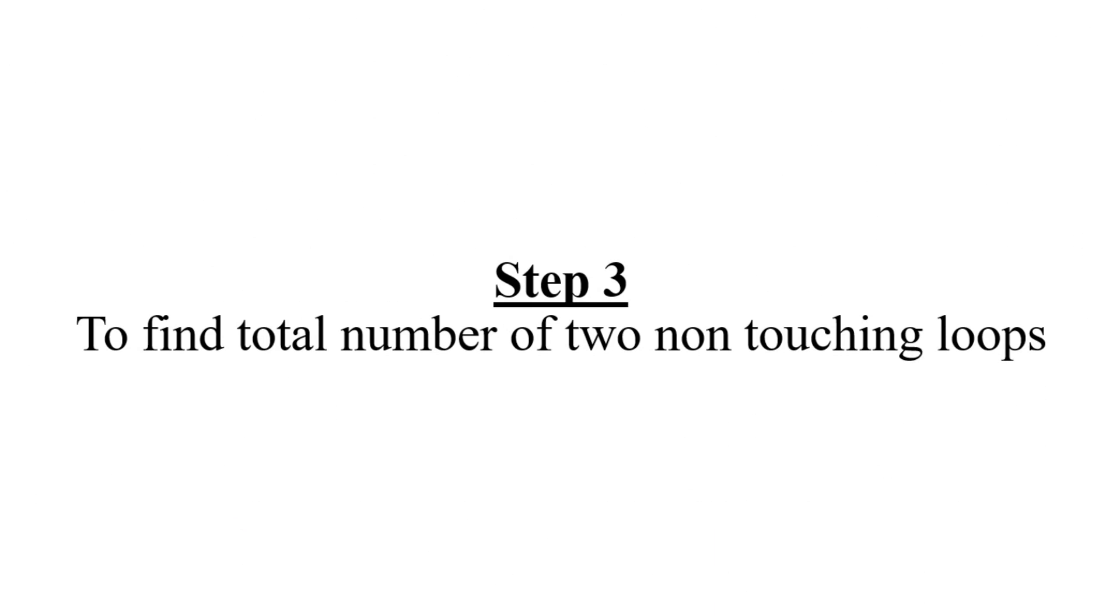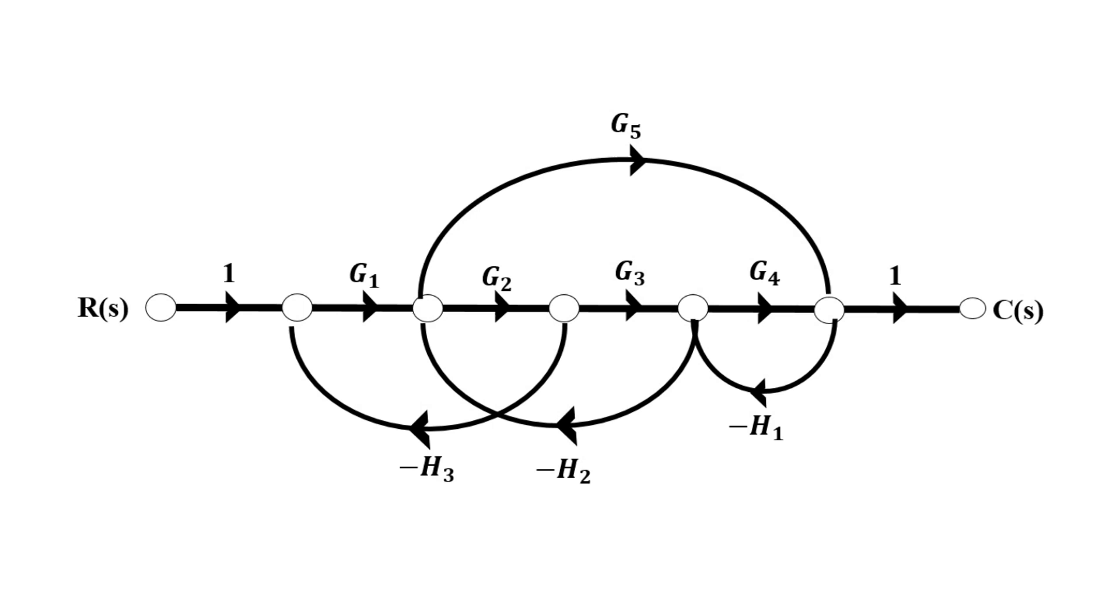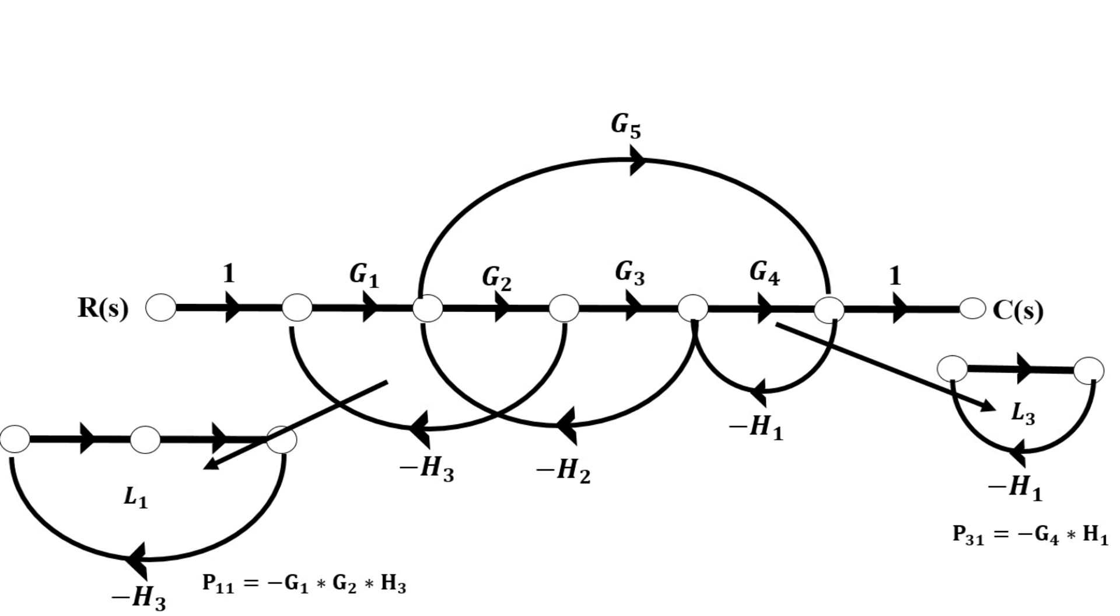Next step is to find the total number of two non-touching loops. Non-touching loops means loops that are not touching each other in any manner. As seen from the diagram, loop L1 and L3 are not touching each other. As we have done previously, we will find the gain of two non-touching loops. We will call it P21. So P21 equals the multiplication of the gain of loop P11 and loop P31.